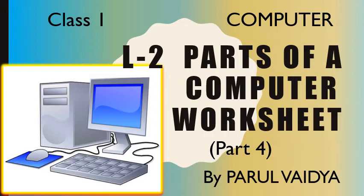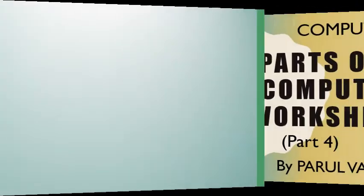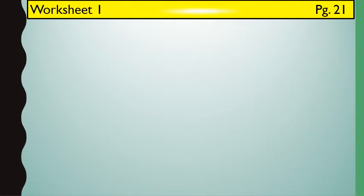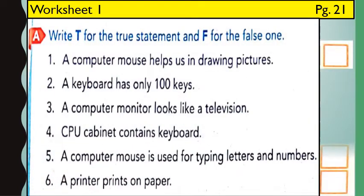Open page number 21. Worksheet 1, page number 21. Write T for true statement and F for false statement. First: a computer mouse helps us in drawing pictures. The statement is true. A computer mouse helps us in drawing pictures and also to point at the things on the monitor.